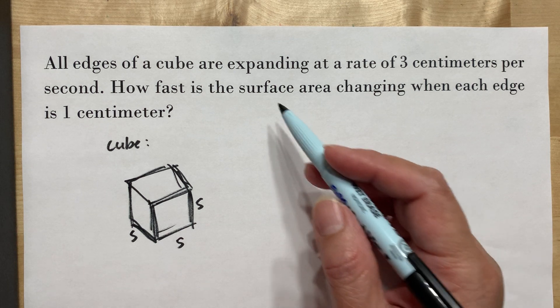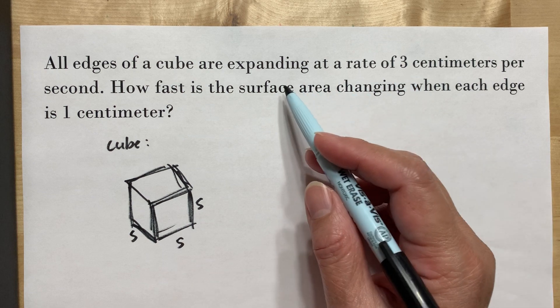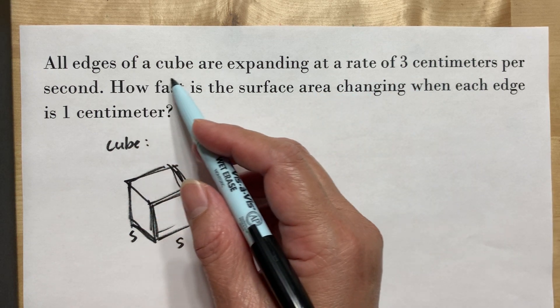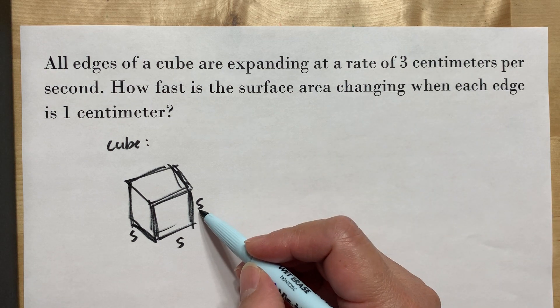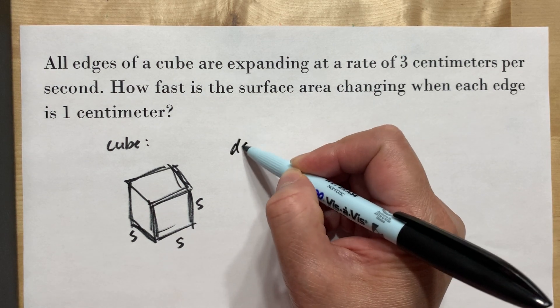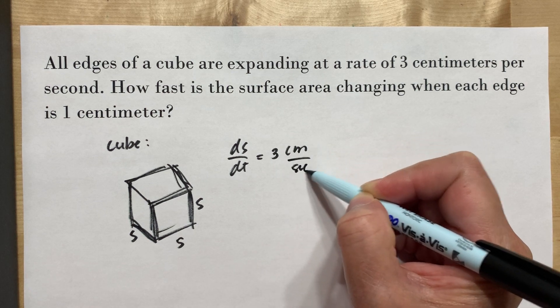Then, what else do we know? It says the rate of the edge of the cube are expanding at a rate of 3 cm. The edge is the side. Meaning ds over dt is equal to 3 cm per second.